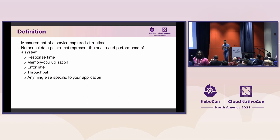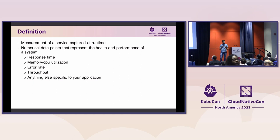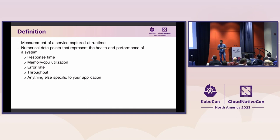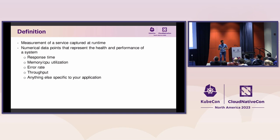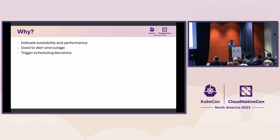By definition, a metric is a measurement of a service captured at runtime. We can think of a metric as a number that represents the performance or health of our service. Examples of metrics are the CPU percentage our system is using, the amount of RAM our system is using, the error rate of the responses output by our system — basically any numeric measurement that represents the performance of that system.